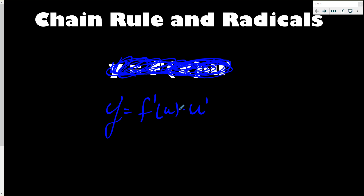The reason we call it the chain rule is because it's used for composite functions. A composite function is something like f of g of x, where you have another function inside of a function. It's best to see this with some examples.